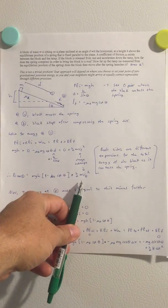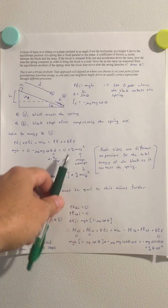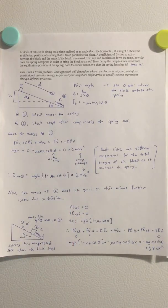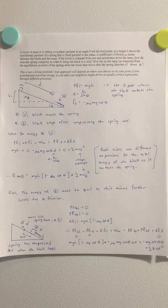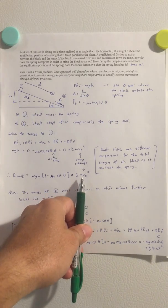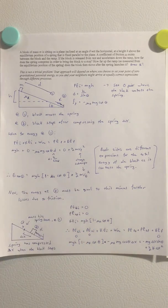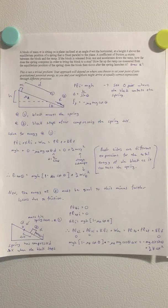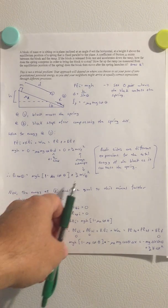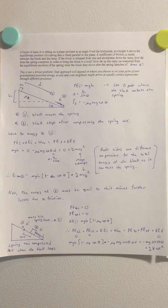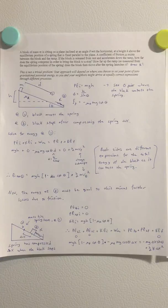I can express the total energy either as mgh times (1 minus mu_k cotangent theta), or as one-half m v₁ squared — the kinetic energy developed by the end of part one. Which expression I use depends on what I'm looking for. If I were asked for the velocity as the block enters the spring, I'd solve for v₁. But since I don't know the velocity and I do know all the other quantities, I'll use the left-hand side. This is the energy the block has as it impacts the spring: the original gravitational potential energy minus the work done by friction.